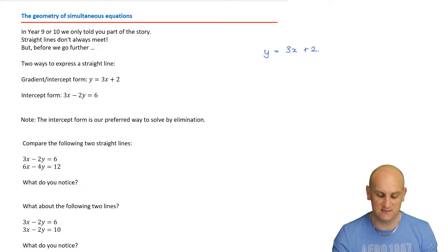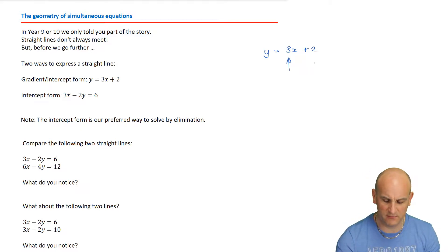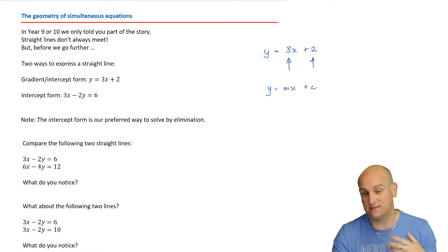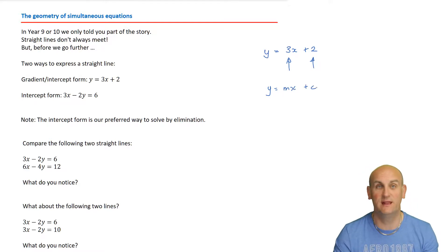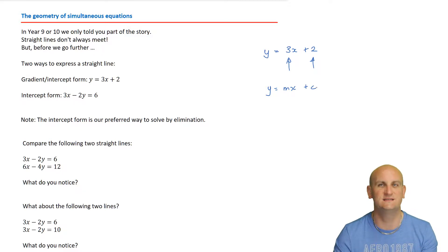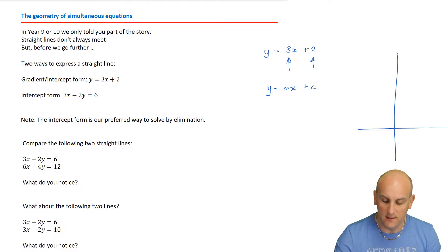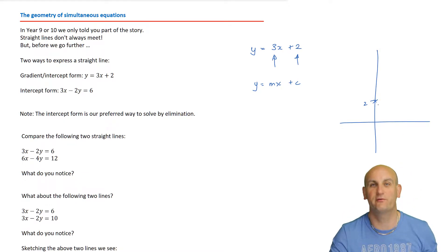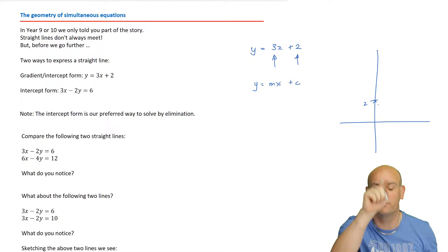Why is that called gradient intercept form? Because there is my gradient, and there is my intercept, written in the form y equals mx plus c. We sometimes like it in that way because it helps us work out the y-axis intercept at 2 - so I'd put a cross at 2 - and it's got a gradient of 3, which means 1 across and 3 up.